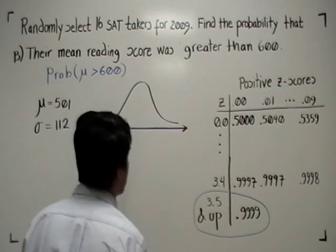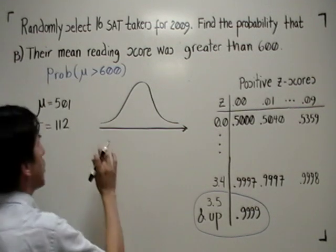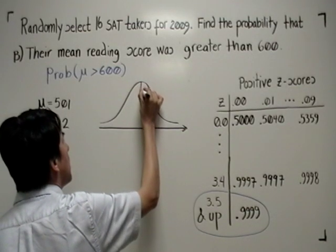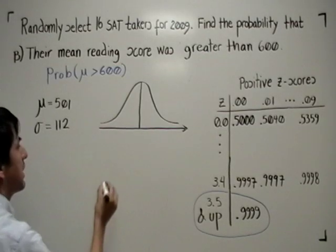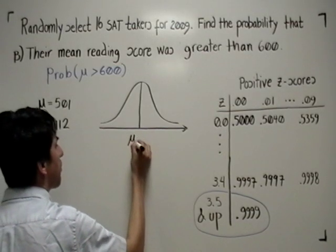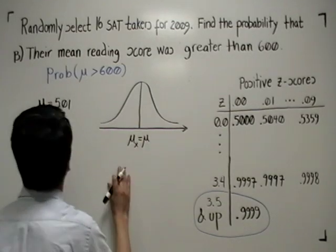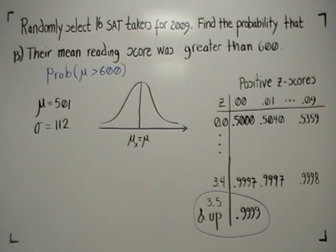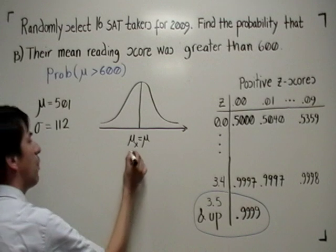So here I'm drawing the normal distribution of the means. That normal distribution by the central limit theorem has a mean which is the same as the mean of the original distribution. In this case, for reading scores, from the table, I have obtained that the average, the mean, was 501.